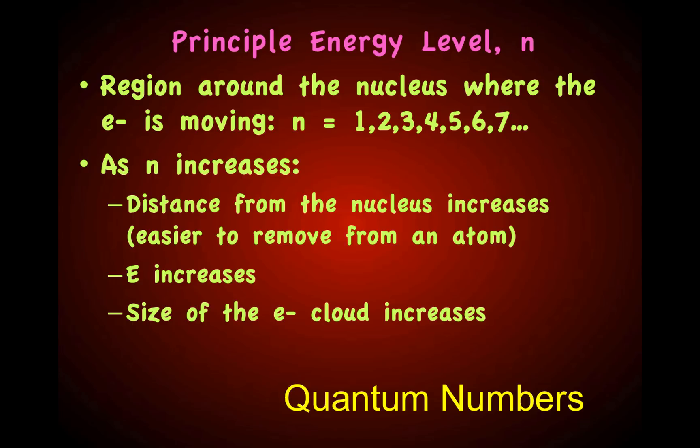The further away an electron is from the nucleus, the easier it is for the electron to be lost. As n increases, the energy of the electron increases, and the size of the electron cloud increases.